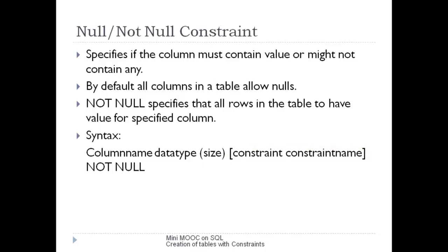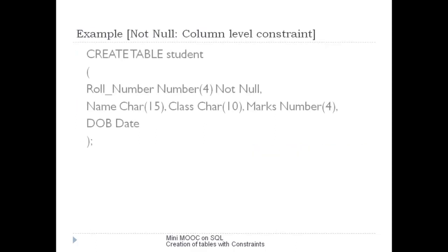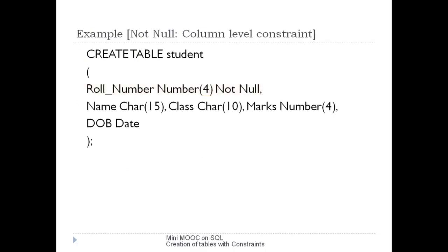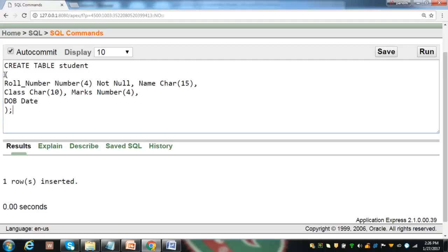However, we can give our own unique name to a constraint by using the keyword CONSTRAINT followed by the constraint name, though it is optional. Let us apply this constraint on the student table. Here, row number is NOT NULL, which means null is not allowed in this column — it is a compulsory column. Let us move to the SQL interface to demonstrate this concept.